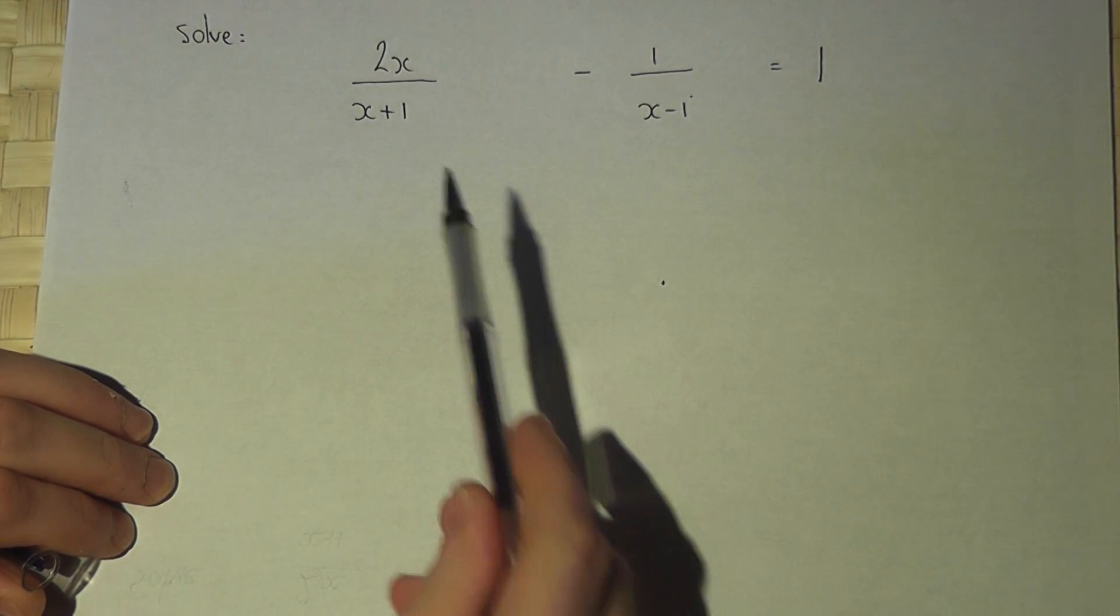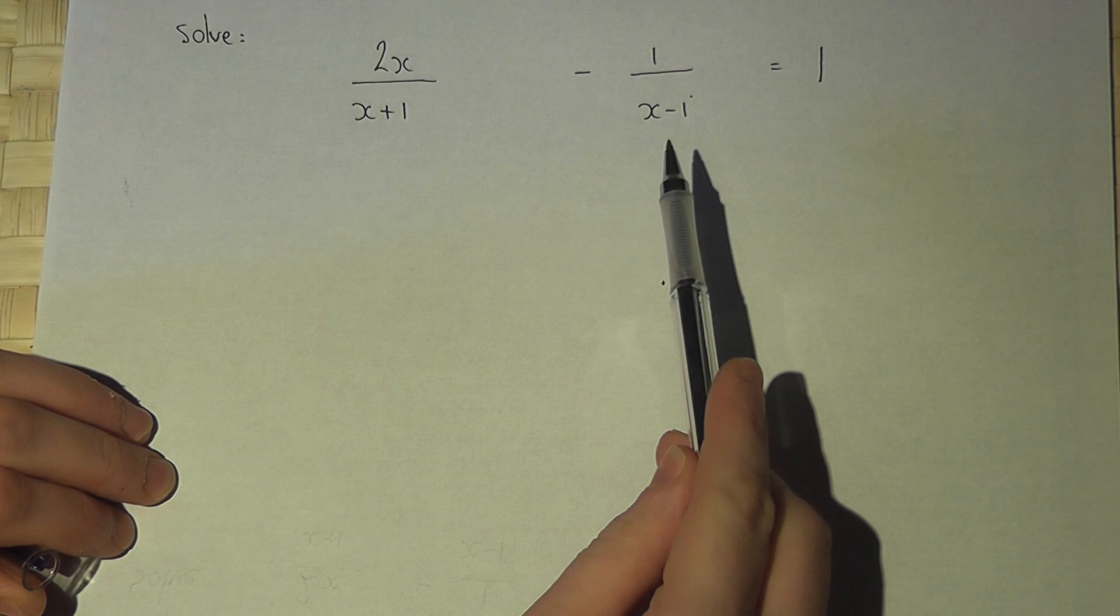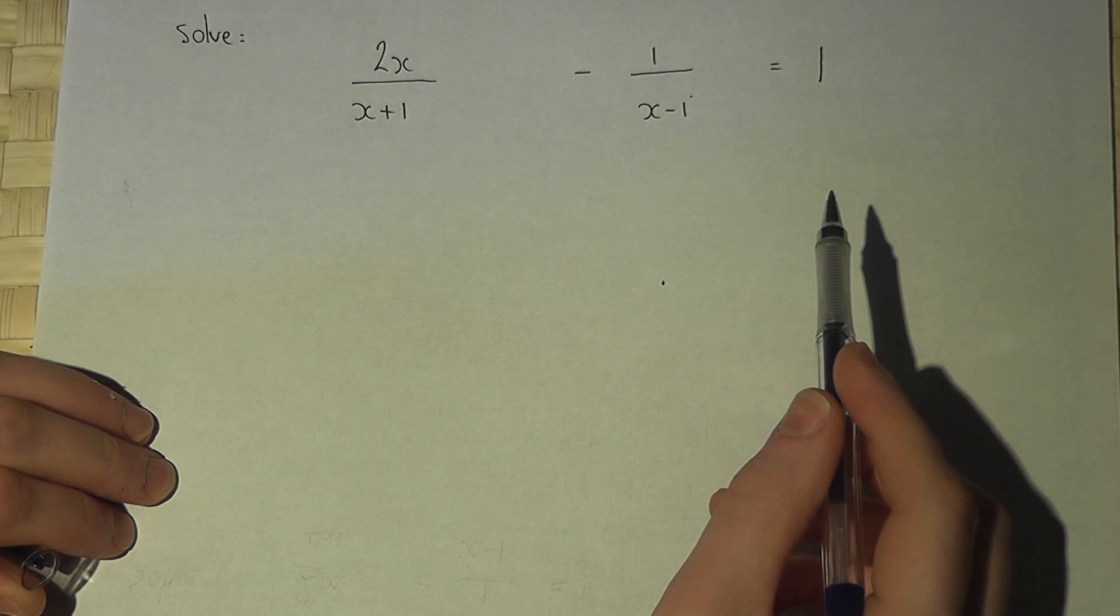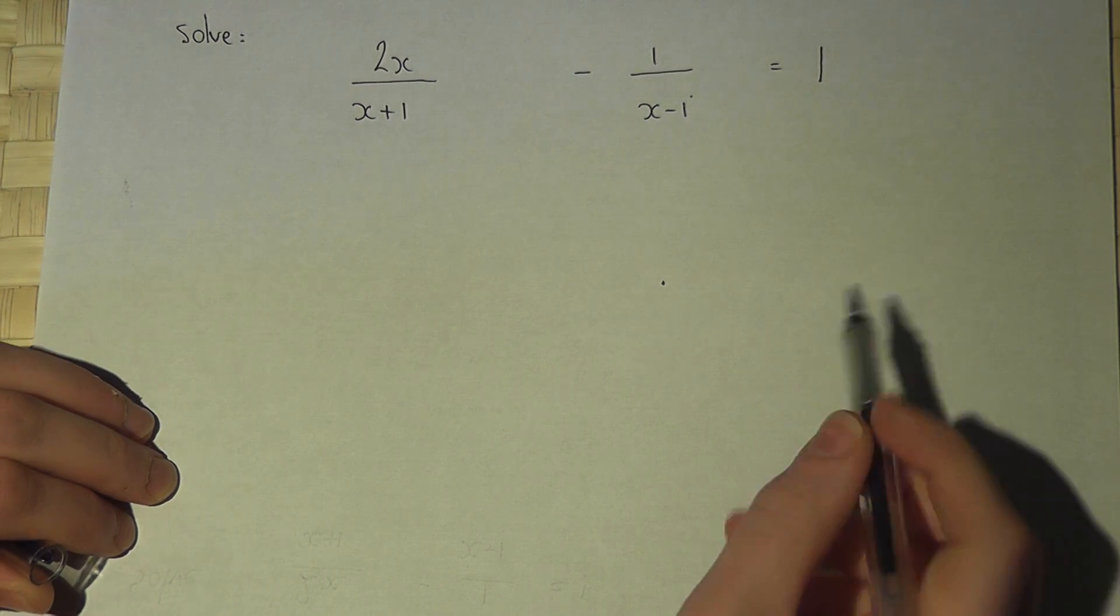This equation contains two algebraic fractions and a constant on the right-hand side. Now to solve this we can follow a few simple steps.